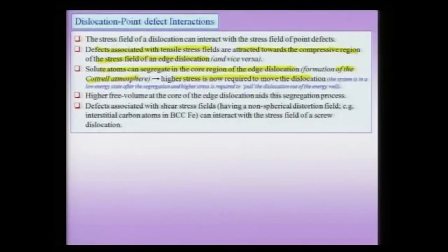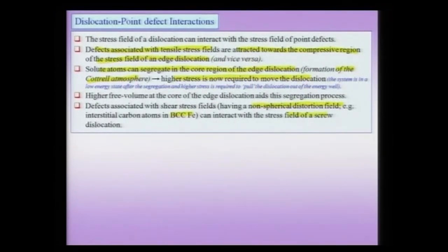An important example is the non-spherical distortion field of the carbon atom in BCC iron. This can interact with screw dislocations, and as we shall see, this kind of segregation of carbon atoms in BCC iron leads to an alteration of the shape of the stress-strain diagram.